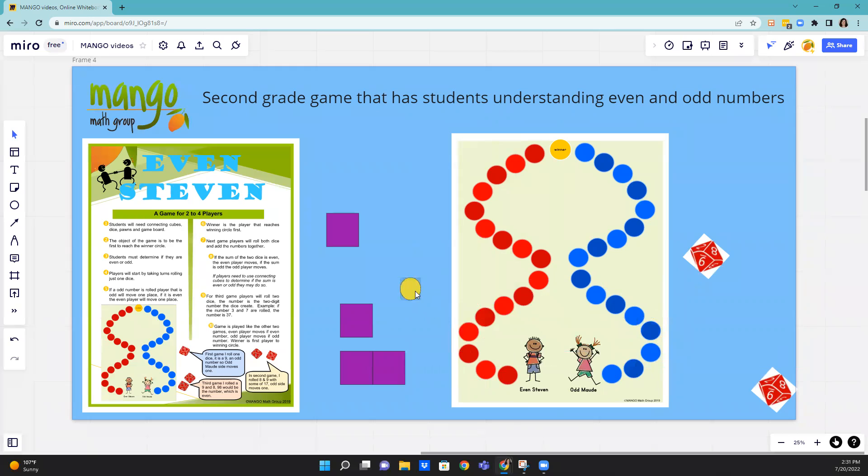Now, once they're doing well with single digits, you can have them roll and add two dice together to come up with double digits, and use their counters to do that. This helps them understand that the digit in the ones place determines if it's even or not. They can figure that out using their connecting cubes. And once they've mastered that addition of single digits, because that's only going to get them up to 18...